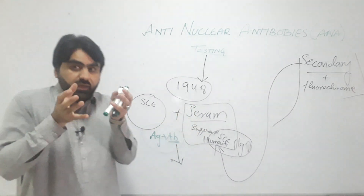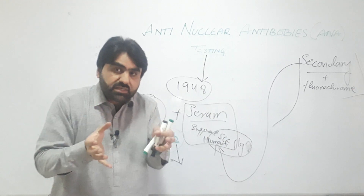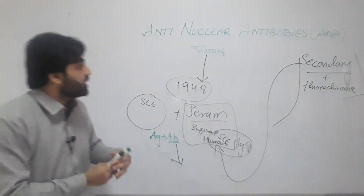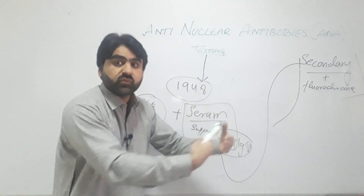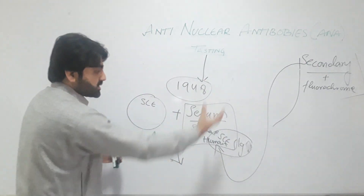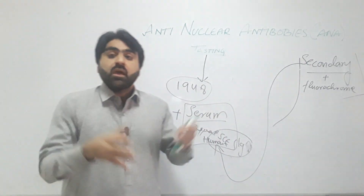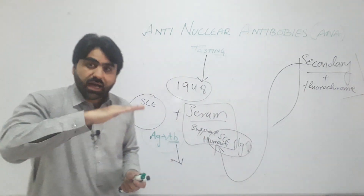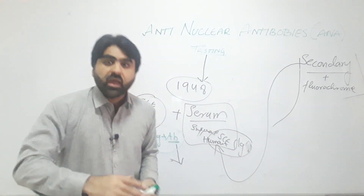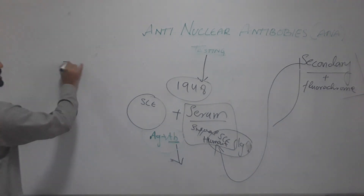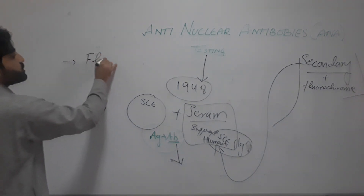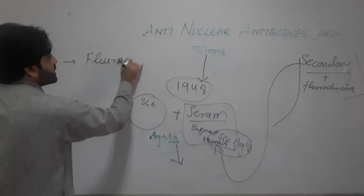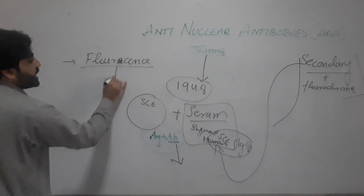This fluorescence was then visualized under a fluorescent microscope, producing different fluorescence patterns. Different fluorescence patterns correlate with different anti-nuclear antibodies, and after addition of the secondary antibody these patterns are reported and correlated with specific anti-nuclear antibodies.